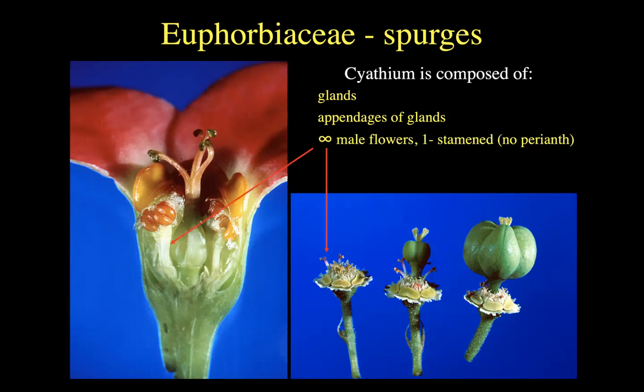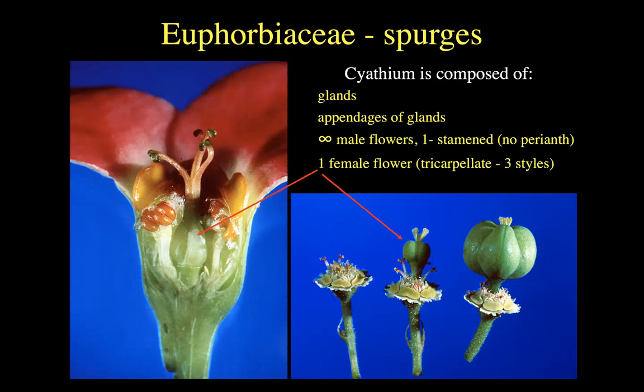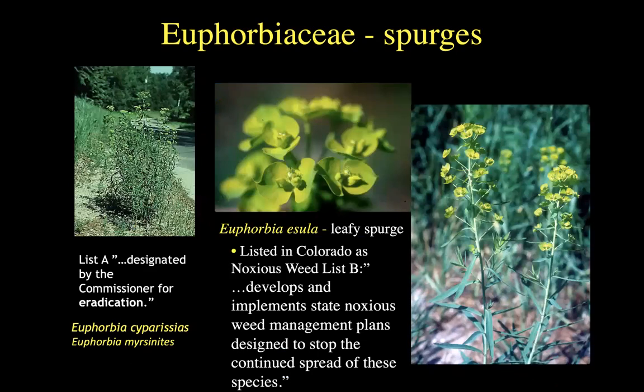What does Euphorbiaceae actually do with its flowers? It has whole flowers that have aborted every single thing except for a single stamen — which is crazy. You could look very early in development or look at what genes are being expressed to see evidence of a true flower there, but everything dies off except a stamen. And then we have a female flower — the exact same thing — everything dies away except for this giant central pistil made up of three carpels with three little styles on it. That's so crazy.